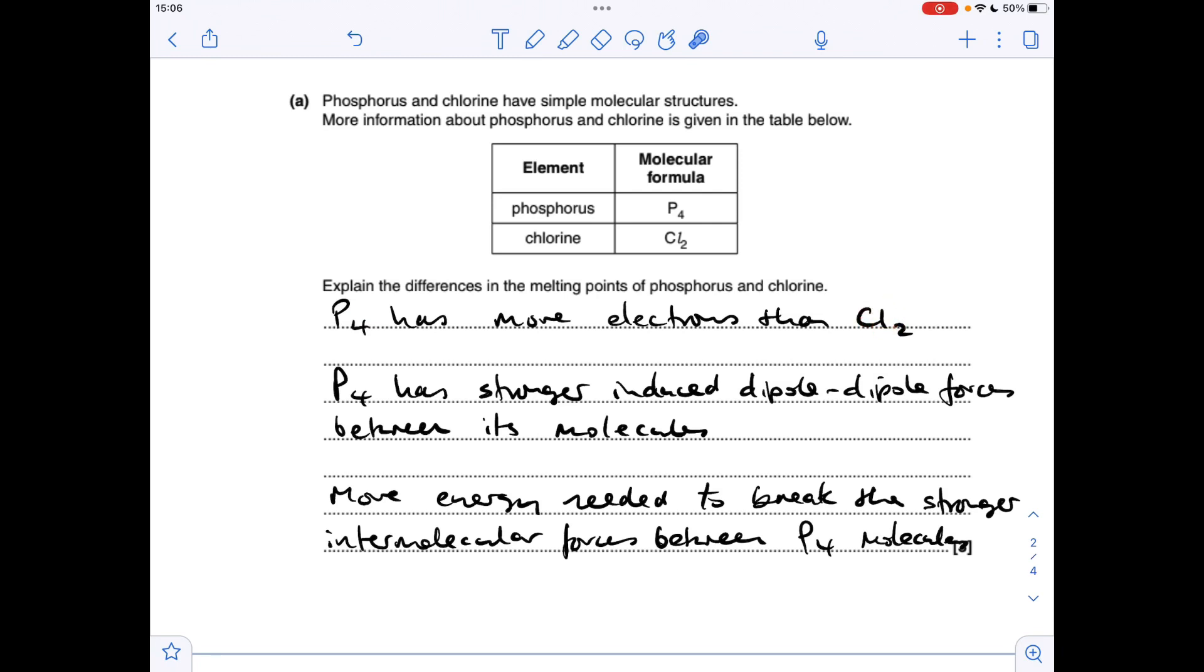So because of that, phosphorus has stronger induced dipole-dipole forces between its molecules. You could say London forces there. And because of that, more energy is needed to break the stronger intermolecular forces between the P4 molecules compared to those Cl2 molecules.